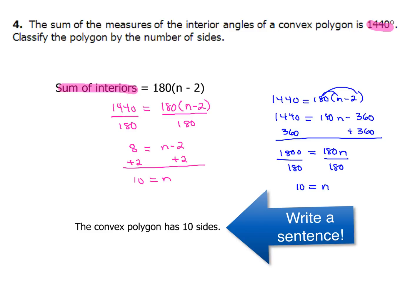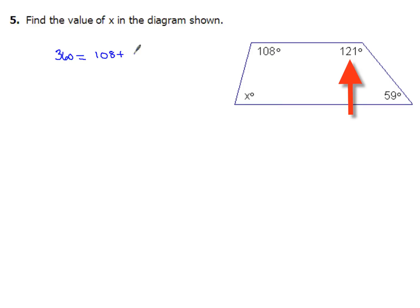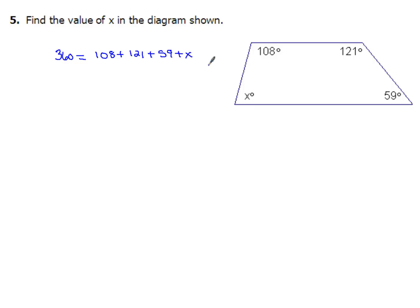For example five, we need to find the value of x in the diagram. This shape is four-sided, so it's a quadrilateral, meaning the sum of the interior angles is always 360 degrees. So: 360 = 108 + 121 + 59 + x. Combining like terms gives 288, and subtracting 288 from both sides gives x = 72.